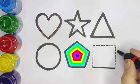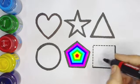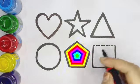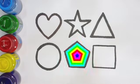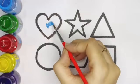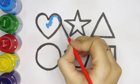Square. This is square. Now let's color the shapes.